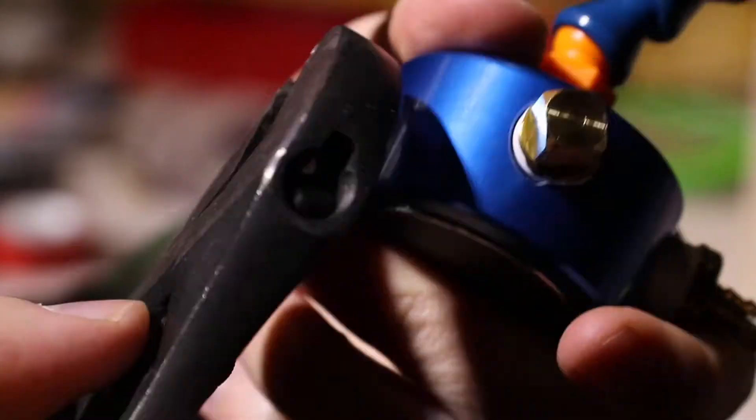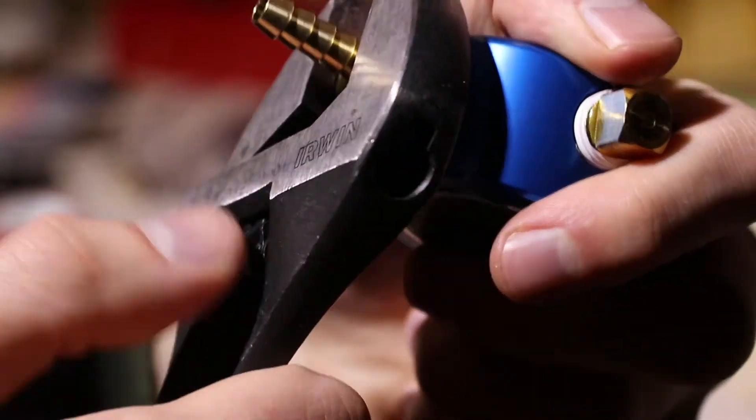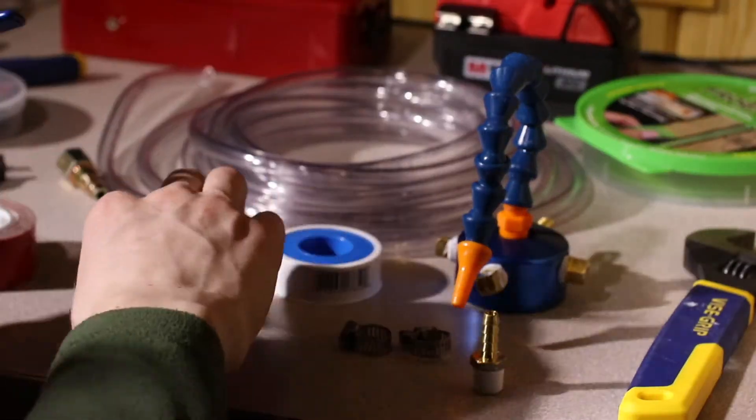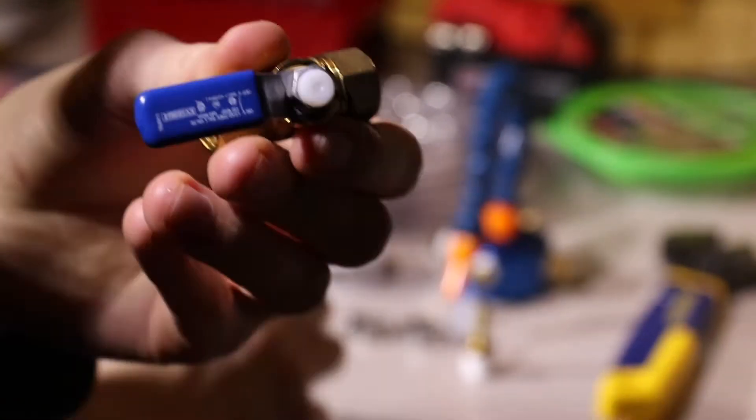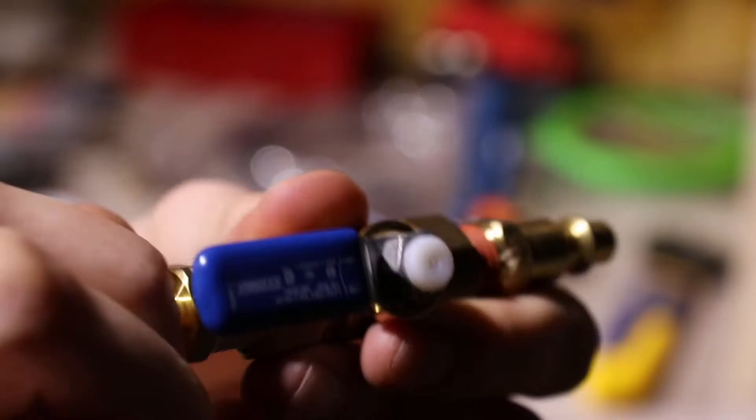I'll be using the Teflon tape on some of the screws. Now, I'm installing a 1.25-inch quick-release fitting and ball valve to go onto the air compressor.